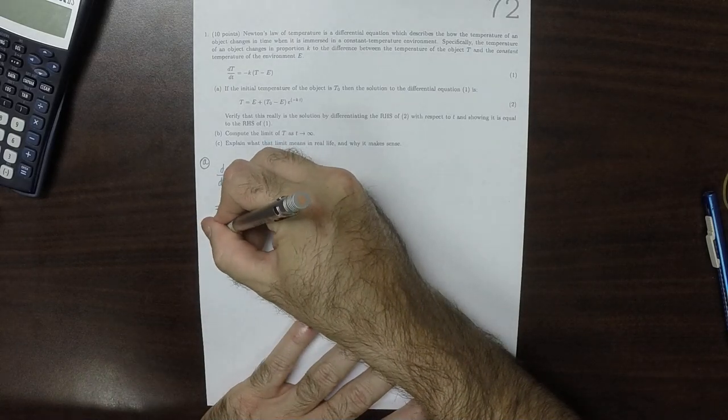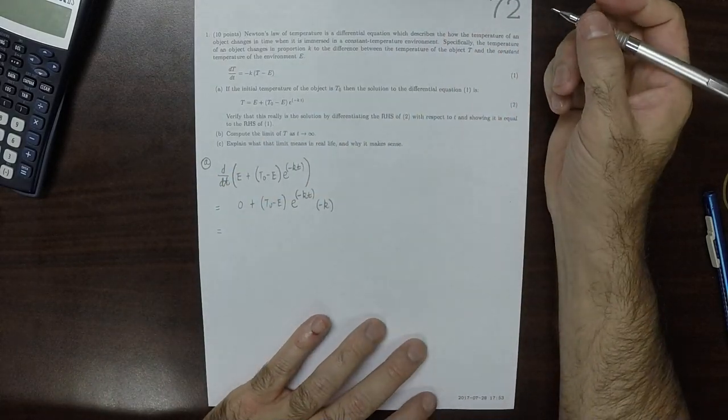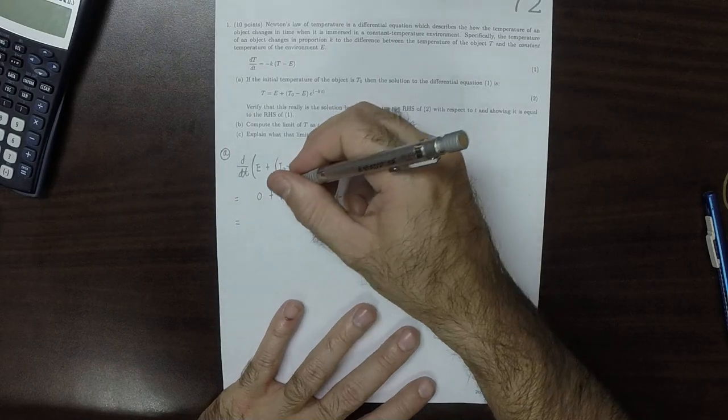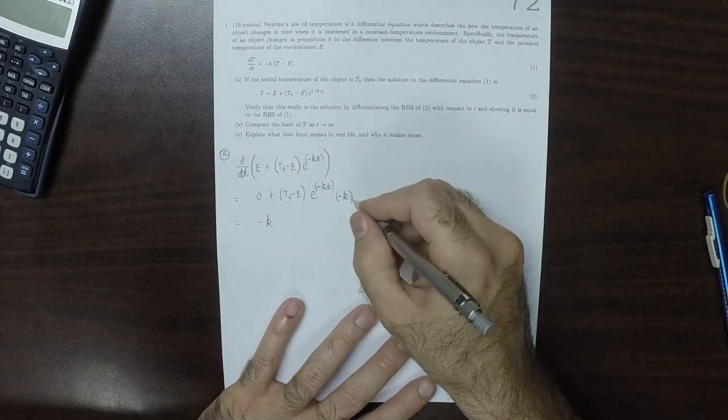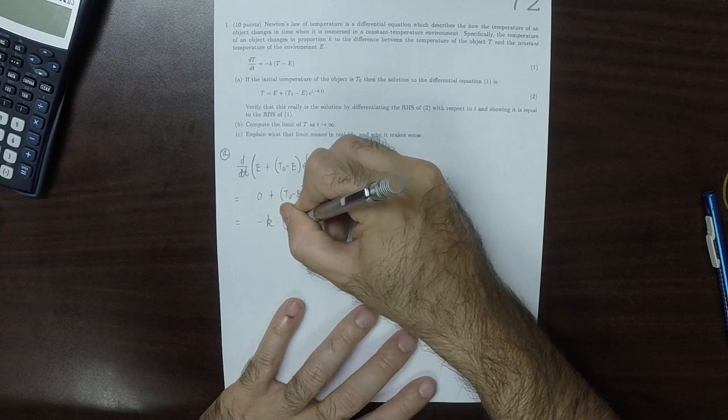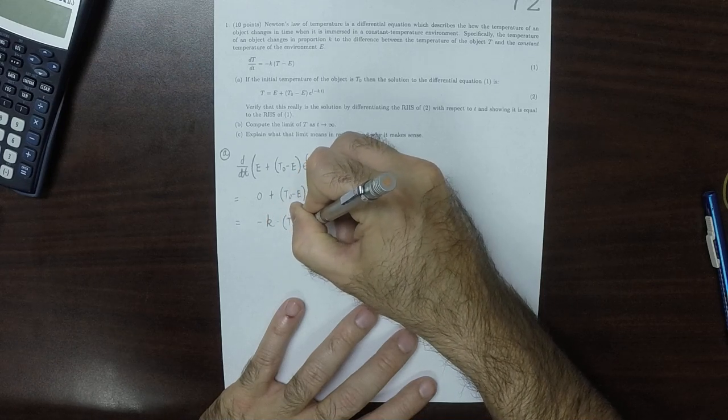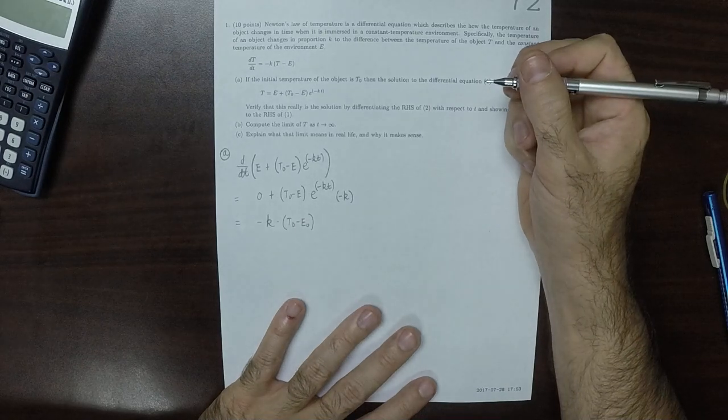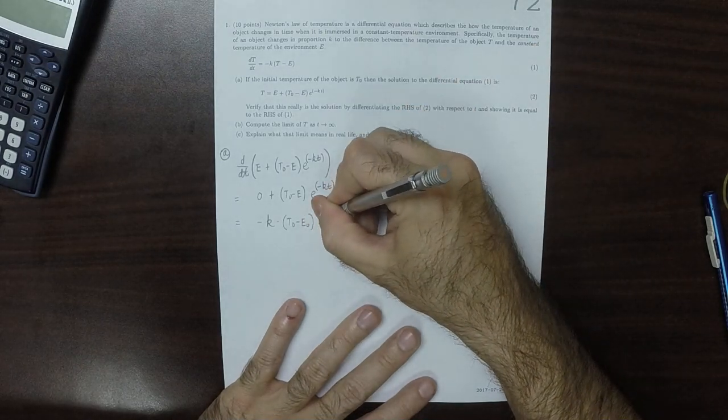Simplifying that just a little bit, that would be equal to negative k, moving that to the front, and then multiplied by t0 minus e, and then multiplied by exponential of negative kt.